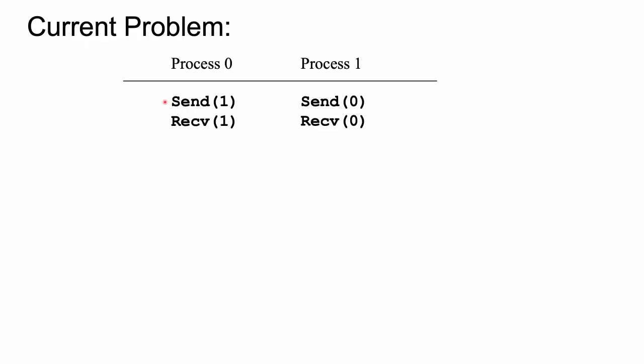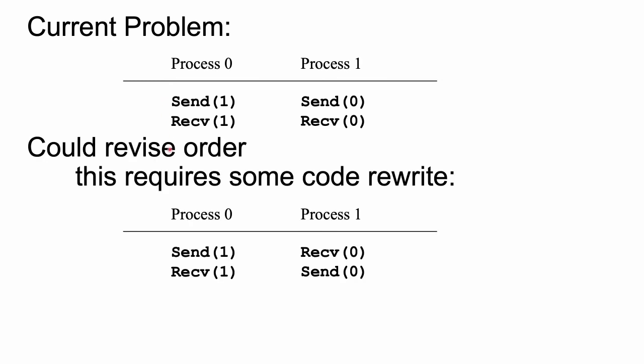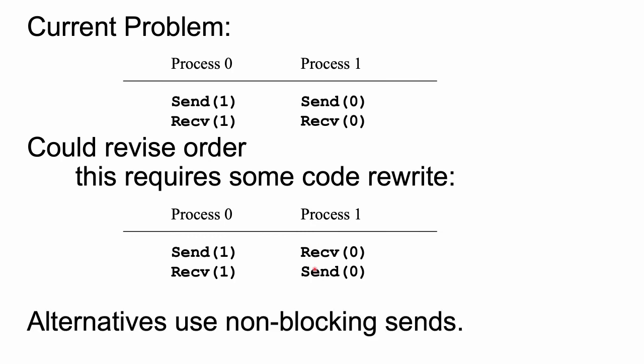So the solution we have is to reorder the send and receive operations. So process zero can send and then receive and we'll redo what process one does. We'll have him receive and then send. For this to work now, we're going to have to rewrite the code that process one has.